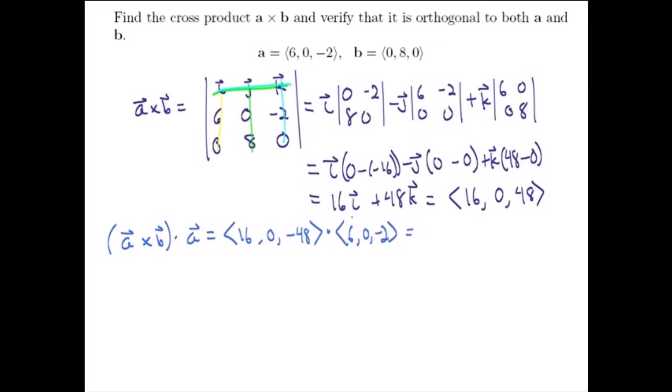we get 6 times 16, which is 96, plus 0 times 0, and then plus negative, well, let's see, that's not negative 48, is it? That's a positive 48, the third component of A cross B. I was afraid we made a mistake there, and we did. 48 times negative 2, that's a negative 96. Yeah, now we add up to be equal to 0.